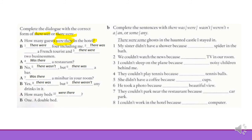Let's continue with part B. Now we have to complete sentences with there was, there were, there wasn't, or there weren't, and then use either a, an, some, or any. For instance, here we have ghost — in the haunted castle I stayed in — this is a plural noun, so we use there were. This is an affirmative sentence, so we are using some. Analyze the rest: take into account whether you have a singular or plural noun, check if the sentence is affirmative, negative or interrogative, and decide whether to use some or any.